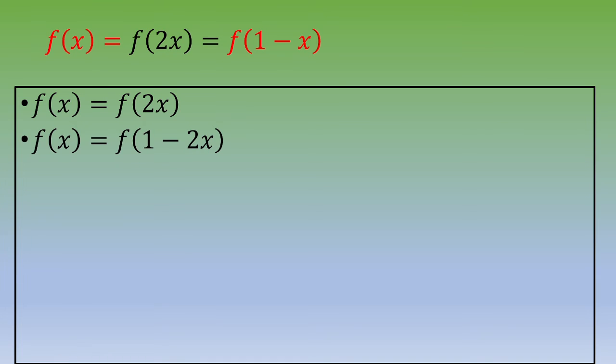Now we're going to use the relationship the other way: f(2x) = f(x). That means we divide the argument by 2, giving us f(x) = f(1/2 - x).